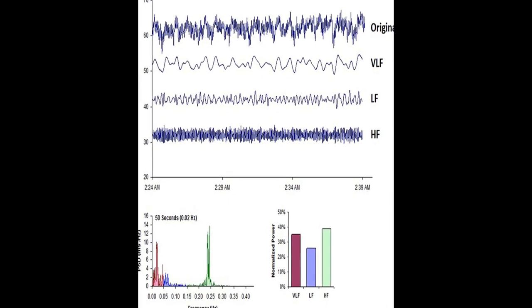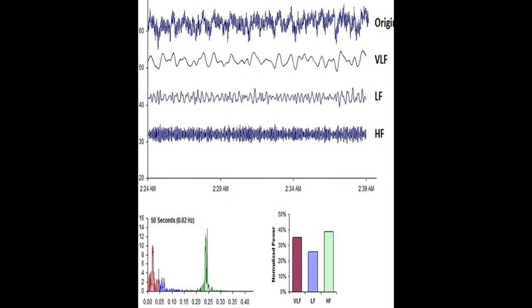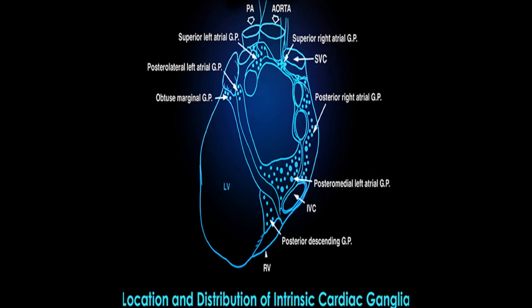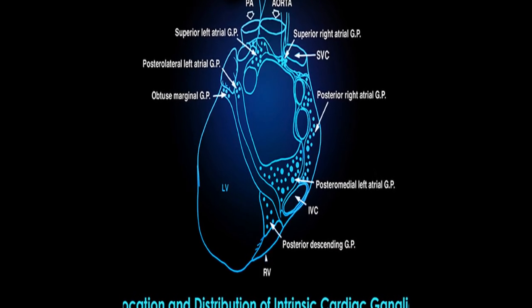Heart Rate Variability, HRV, is an emergent property of interdependent regulatory systems that operate on different time scales to adapt to challenges and achieve optimal performance.